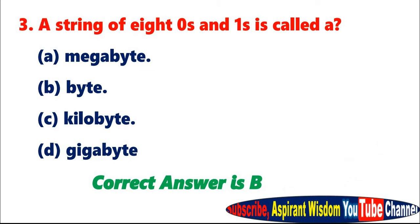Question 3: A string of eight zeros and ones is called A. Megabyte. B. Byte. C. Kilobyte. D. Gigabyte. Correct answer is B.